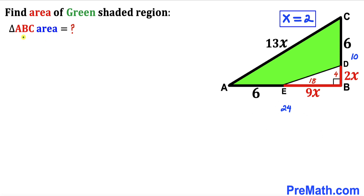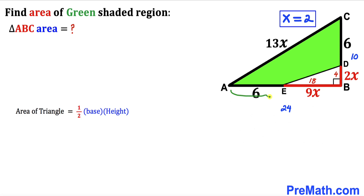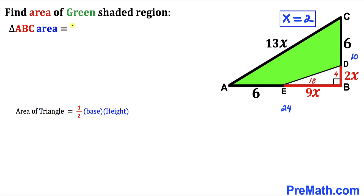Now we calculate the area of the big right triangle ABC using the formula: Area = ½ × base × height. The base is 24 and the height is 10, so the area = ½ × 24 × 10 = 120 square units.